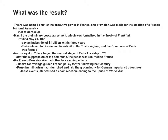They met at Bordeaux. March 1, the preliminary peace agreement, which was formalized in the Treaty of Frankfurt, was ratified May 21, 1871. They had to pay an indemnity of a million within three years. Paris refused to disarm and submit to the Thiers regime, and the Commune of Paris was formed. Troops loyal to Thiers began its second siege of Paris, April to May of 1871.